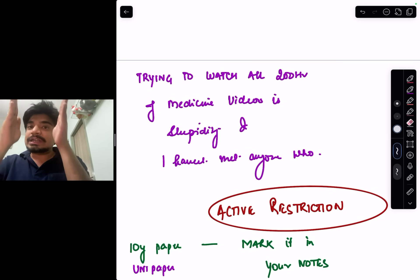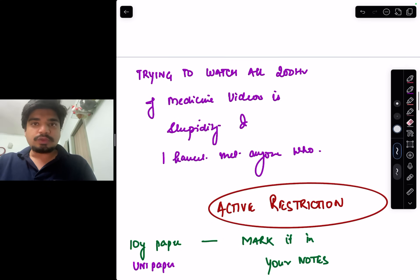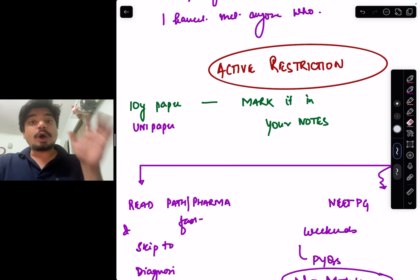How do you do this active restriction of topics? Simply pass five to seven year papers of your university because the first focus is cracking your final prof exam. Mark them in your Marrow notes or whichever notes that you're using, or PrepLadder notes, or DBMCI, or Dr. Thumb's notes, and stick to those notes.